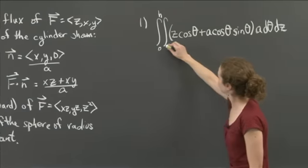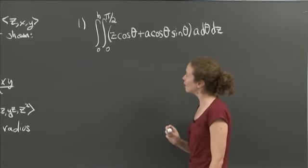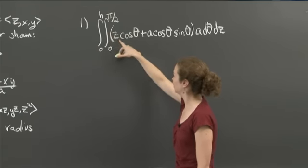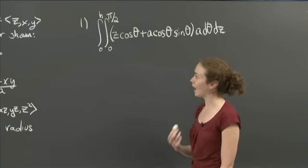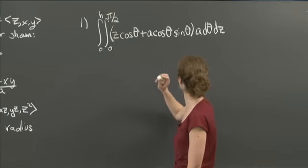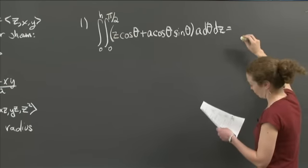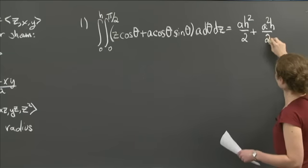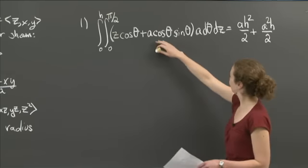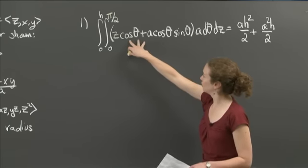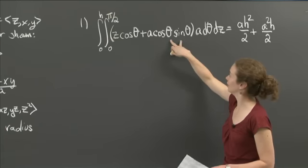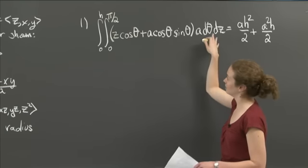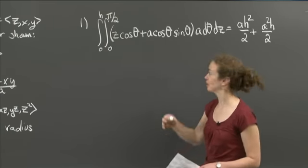Now with a and h as constants and z and theta as variables, I can integrate. Integrating in theta first: the trig identity 2 sin θ cos θ = sin 2θ is helpful. Then integrating in z and evaluating from 0 to h gives the final answer for problem 1: ah²/2 + a²h/2.